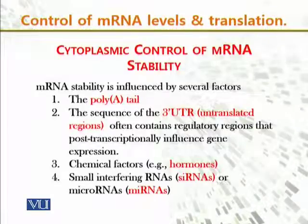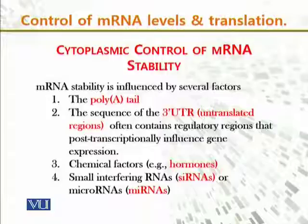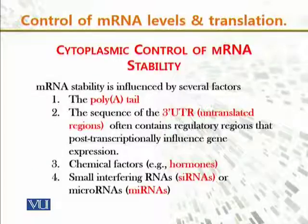Cytoplasmic control involves messenger RNA stability, because there must be a stable RNA present. Messenger RNA stability is influenced by several factors in the cell — for example, the poly-A tail and the sequence of the 3'-UTR. UTR stands for untranslated regions of messenger RNA, and they often contain regulatory regions that regulate protein synthesis and post-transcriptional gene expression.